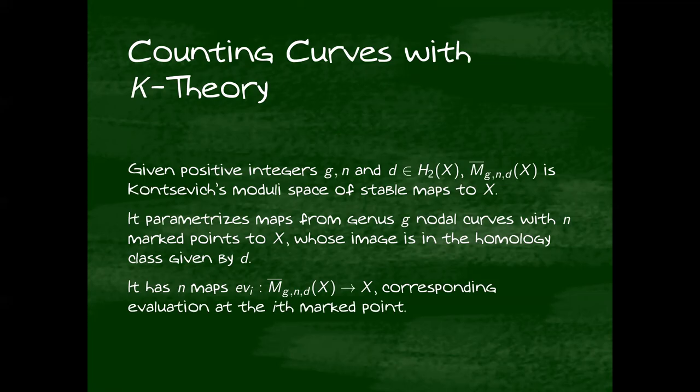So if I fix a genus, a positive integer n, and some kind of curve class inside the second homology of X, I can define the Kontsevich moduli space M_{g,n}(X,d), which parameterizes maps from genus g nodal curves with n marked points into X and whose image lies in the homology class given by d. And the space has n maps to X given by evaluating the curve, evaluating the map at each marked point of the curve.